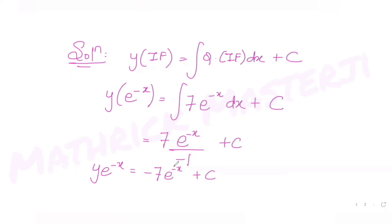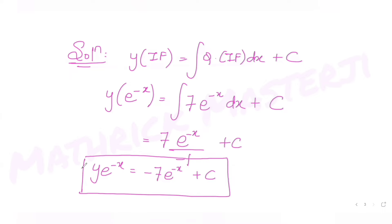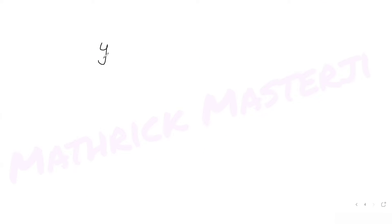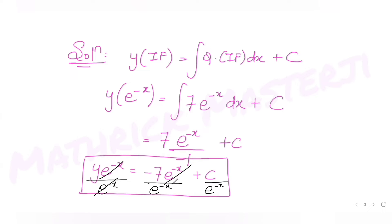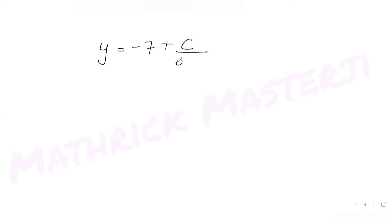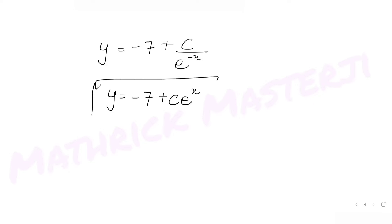So we get y · e^(−x) = −7e^(−x) + C. Multiplying throughout by e^x, both e^(−x) terms cancel, giving y = −7 + C · e^x. This is the general solution of the differential equation.